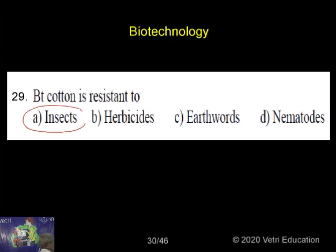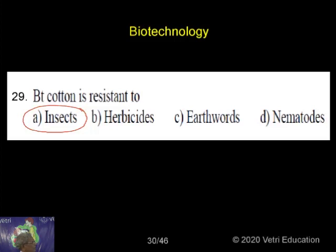There is an insect called bollworm. This bollworm will go and eat the fruits. While in the BT cotton, during the flowering and fruiting stage, it will go and eat this particular worm.